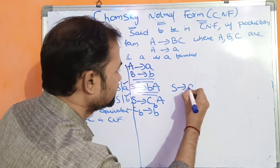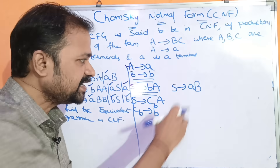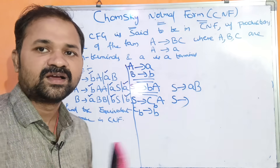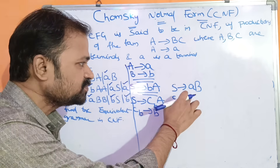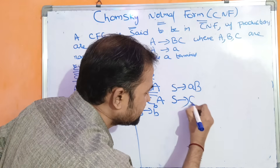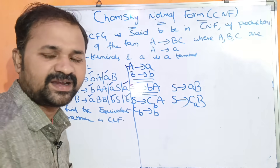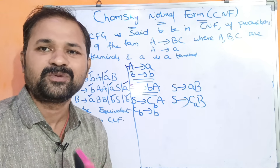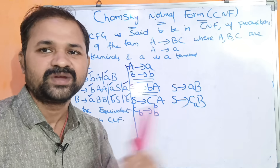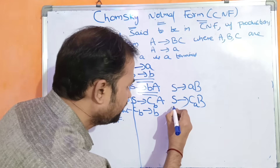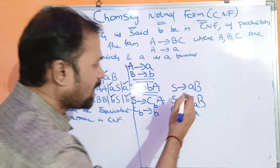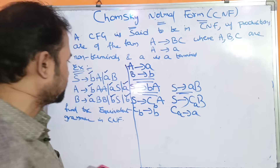The second production is S implies AB. Here A is the terminal symbol. We replace it with CA, so S implies CAB, where CA implies A. So S implies AB is replaced with these two productions.